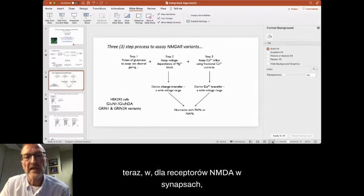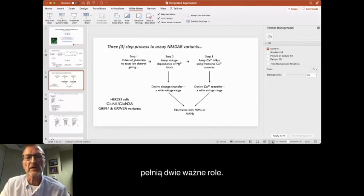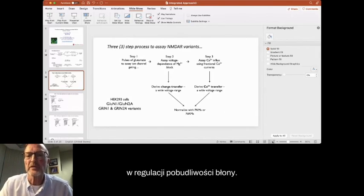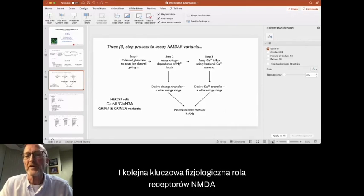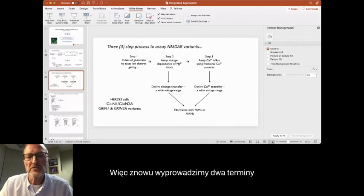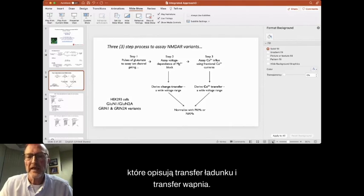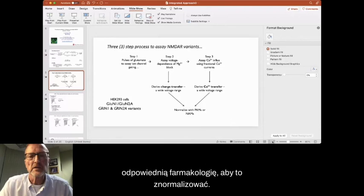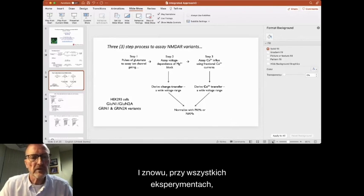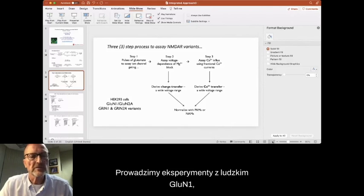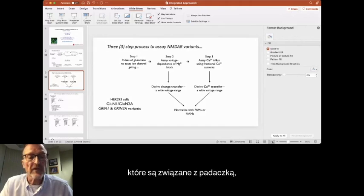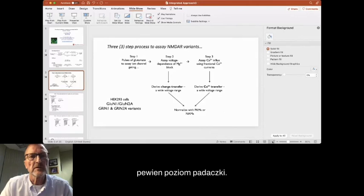Now for NMDA receptors at synapses, there's two prominent roles they carry. One is a charge transfer, and this is their role in regulating membrane excitability. And another key physiological role of NMDA receptors is this calcium transfer. So again, we're going to derive two terms that describe charge transfer and calcium transfer. And again, then our goal is to use pharmacology, the appropriate pharmacology to normalize this. And again, all experiments I'm going to show are with HEK293 cells. We're doing experiments with human GluN1 and human GluN2A. And we've selected a subset of variants, GRIN1 and GRIN2A variants that are associated with epilepsy, some level of epilepsy. So I guess I got to stop, and I'm going to restart it.